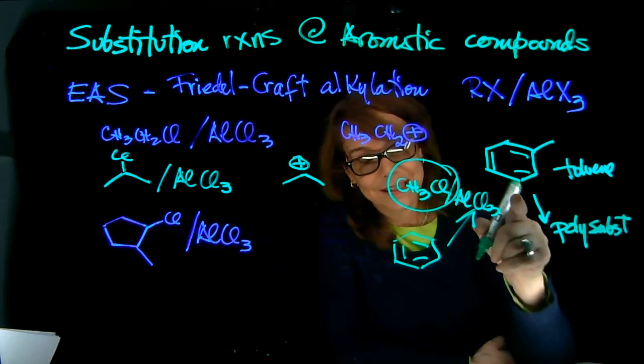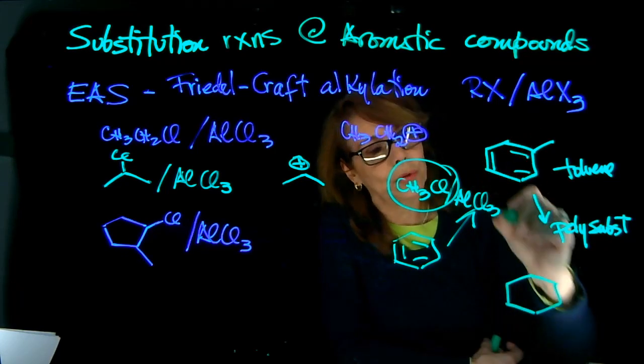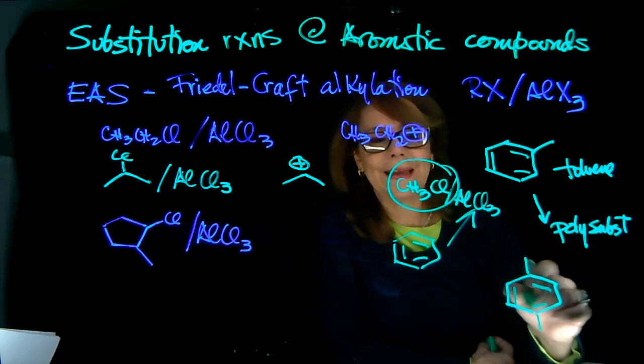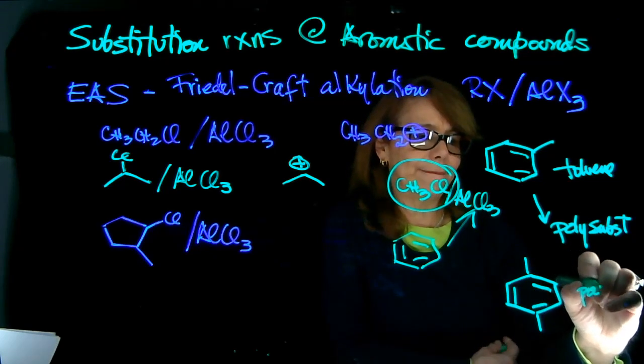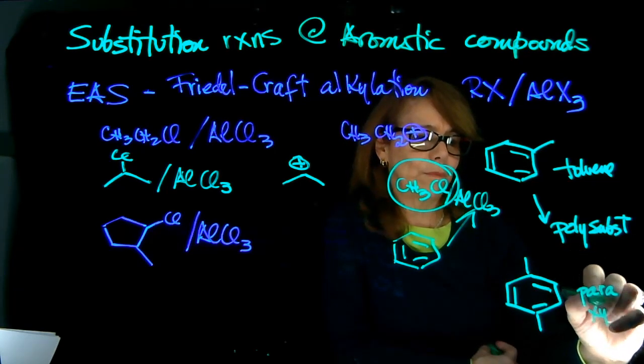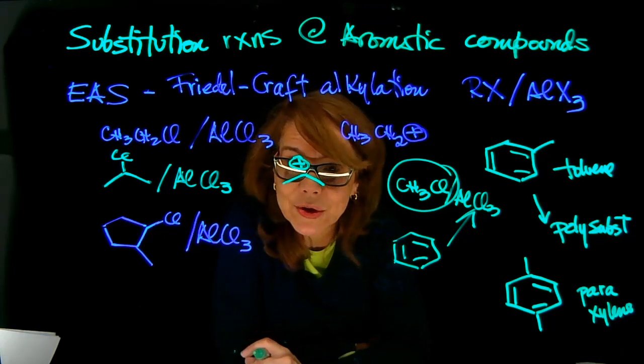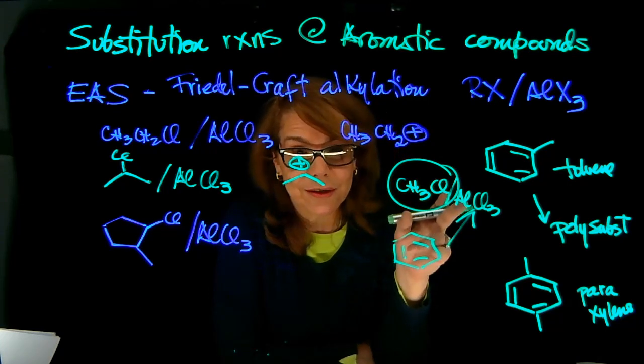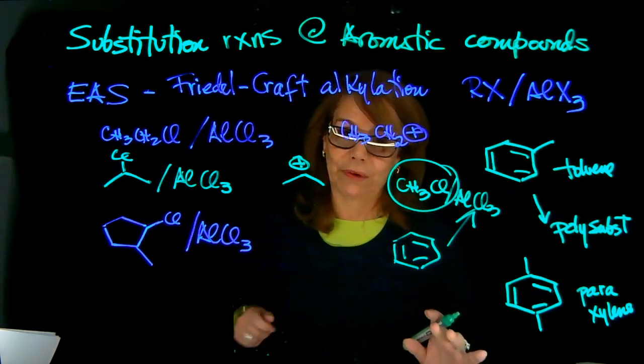What that means is that we can have polysubstitution. In other words, after you put one methyl group, you can put another, and you can do another. So that would be para-xylene. And that is a problem if I just want to make one.